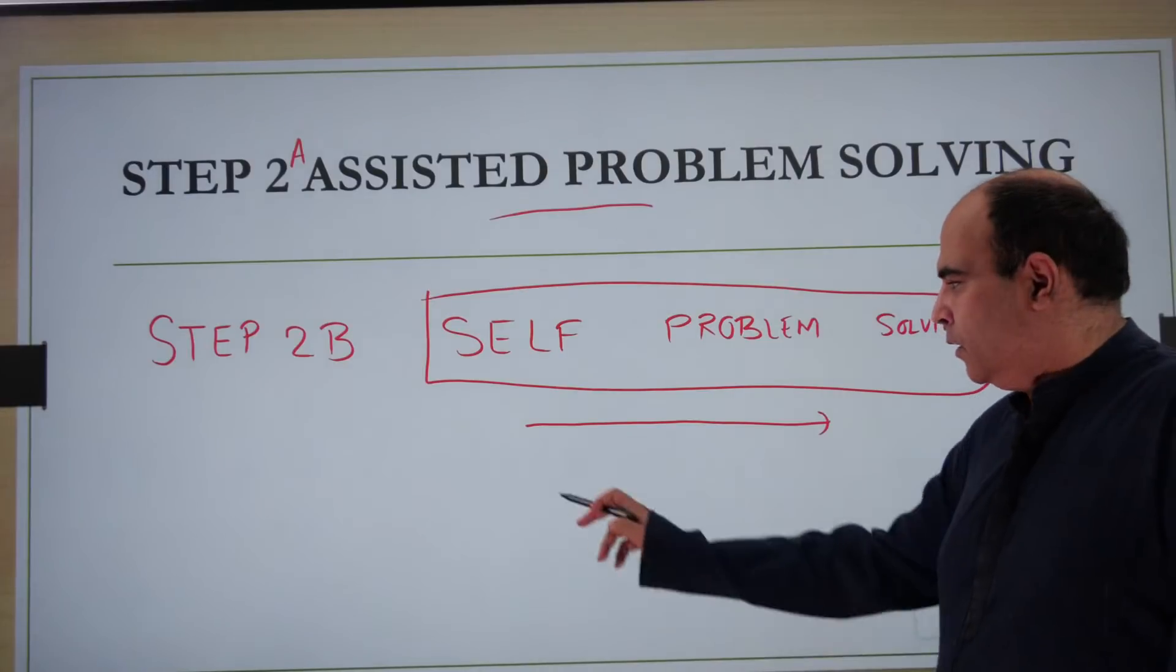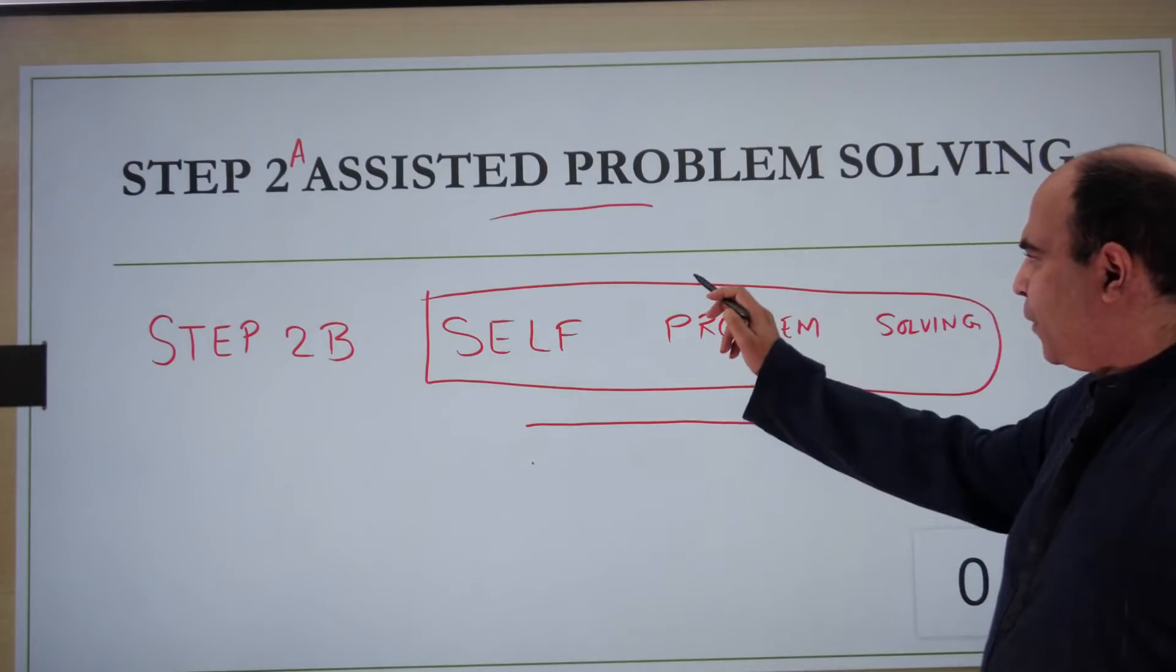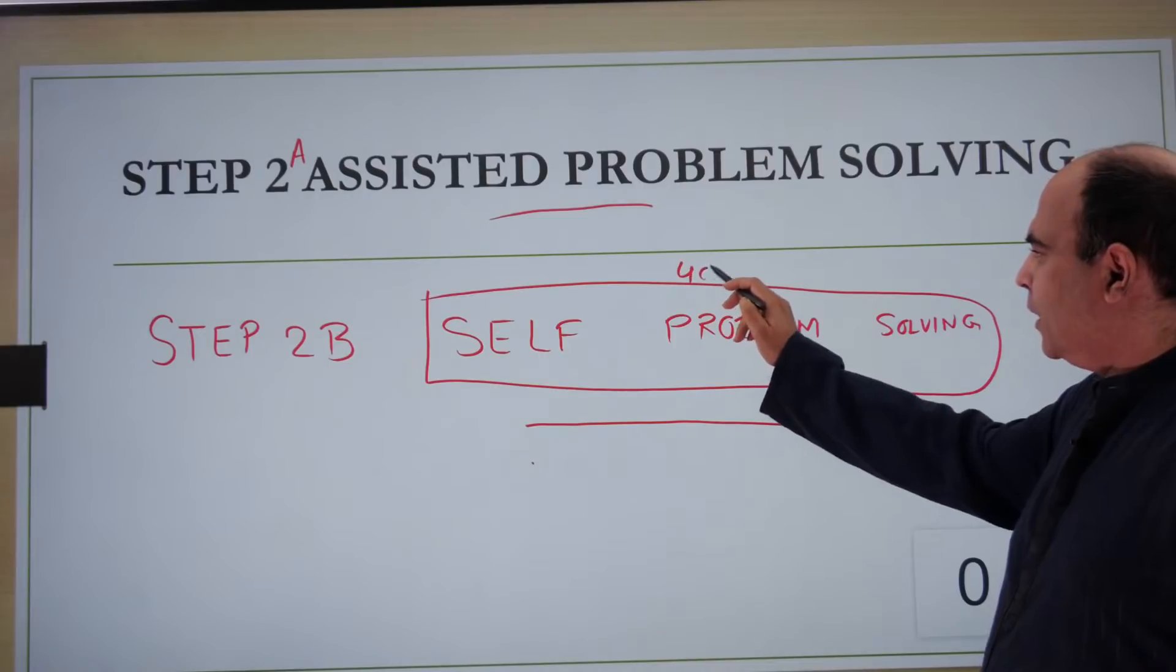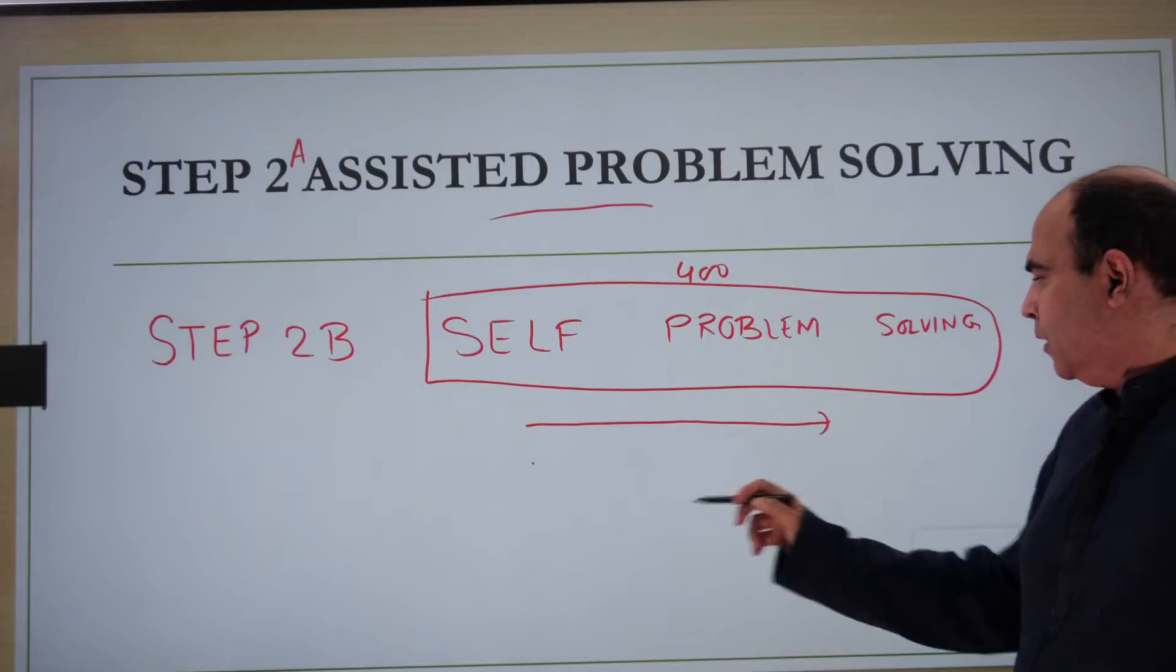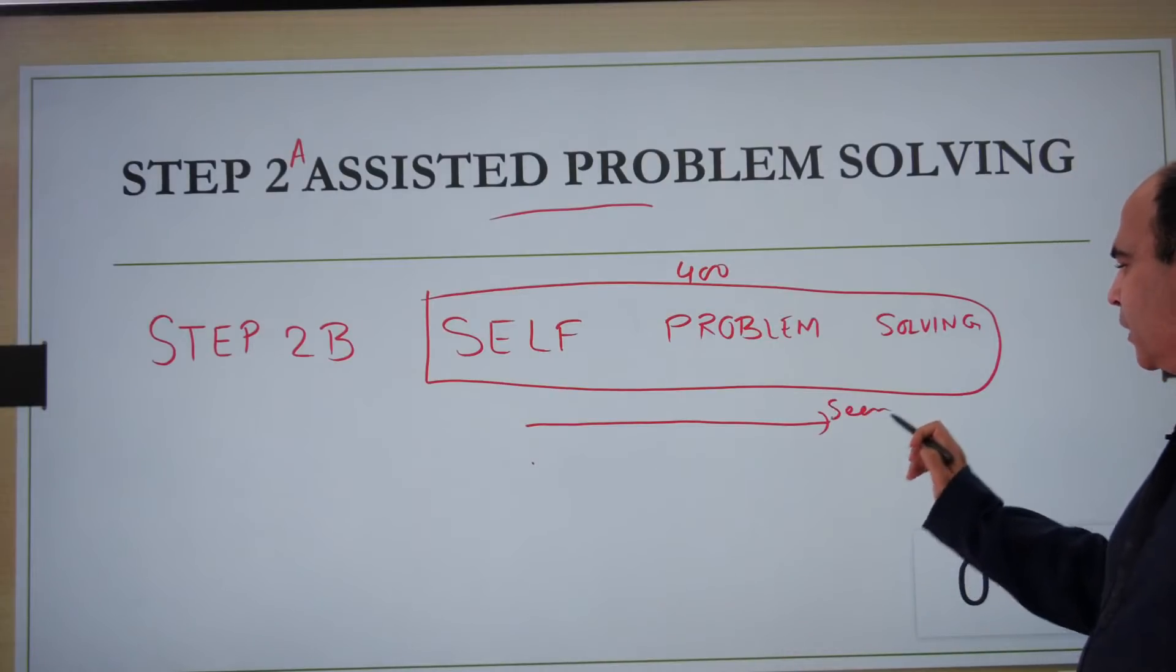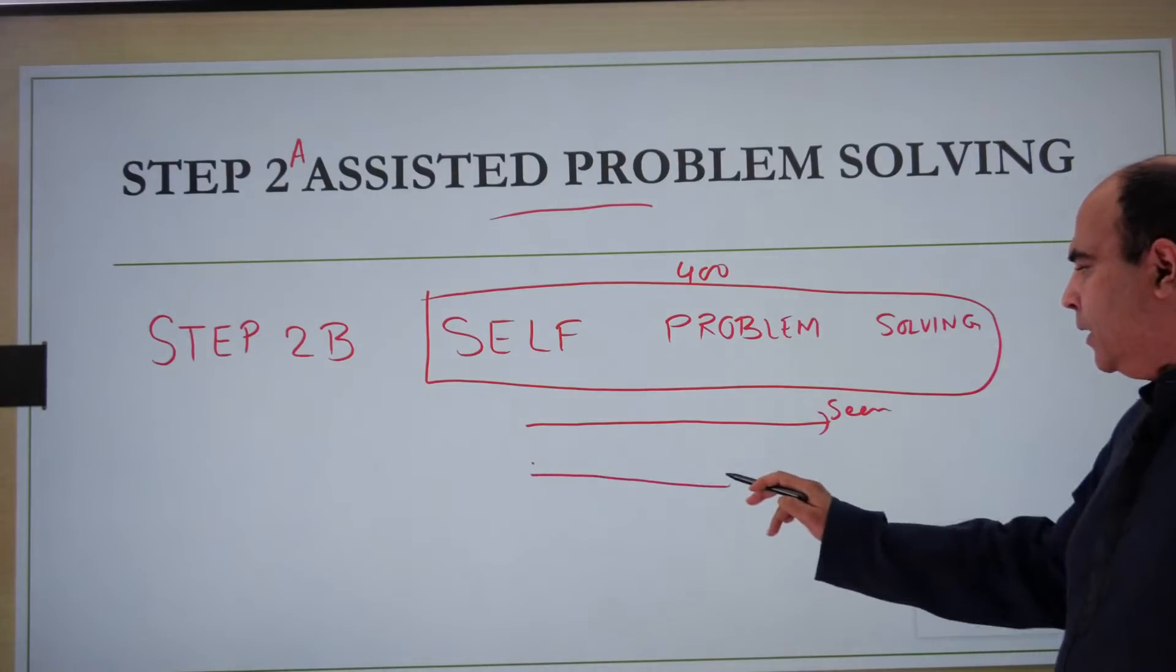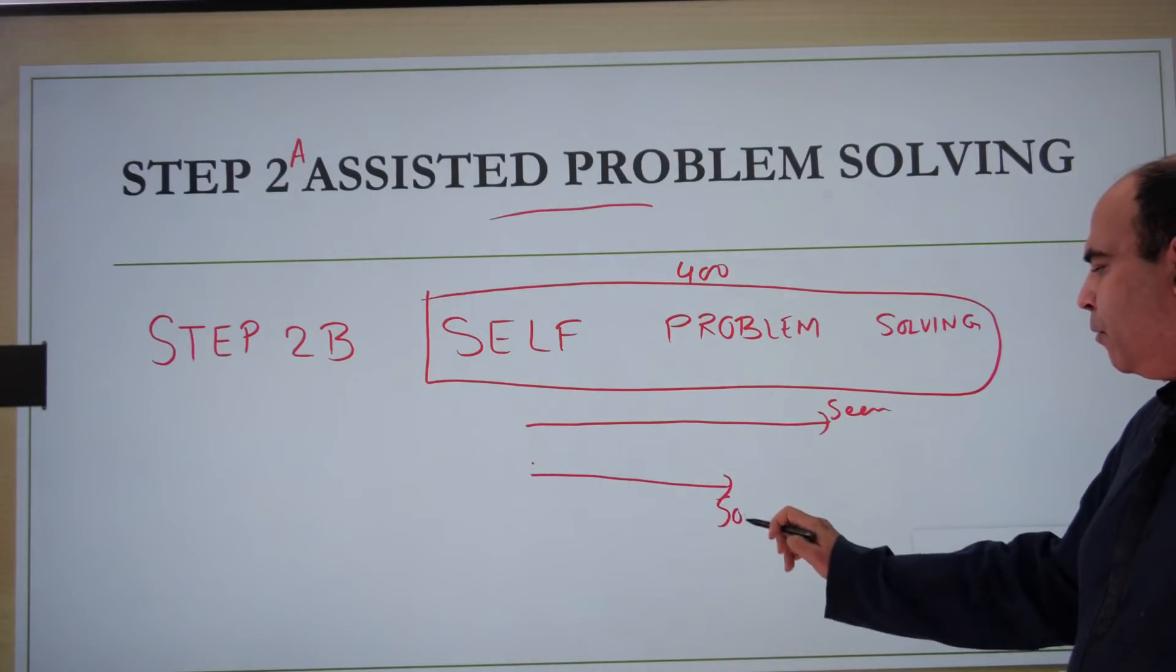When you go through self problem solving, what will happen is that all the questions that you pick up, you will not be able to solve. If you are defining, for example for a chapter like time, speed, distance, if you define that I want to do 400 questions of self problem solving and you pick up a question bank, if this is the number of questions that you see, this will be the number of questions that you have been able to solve.